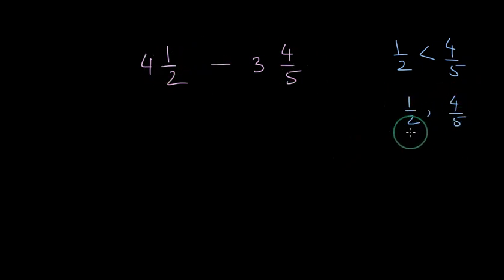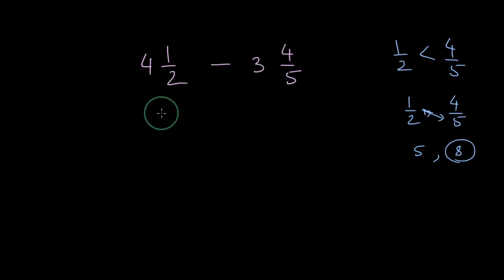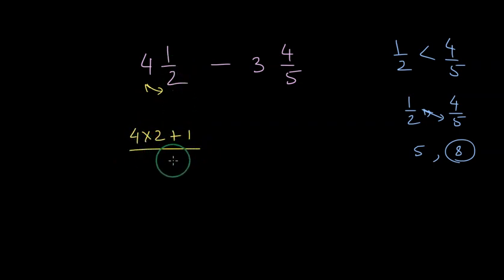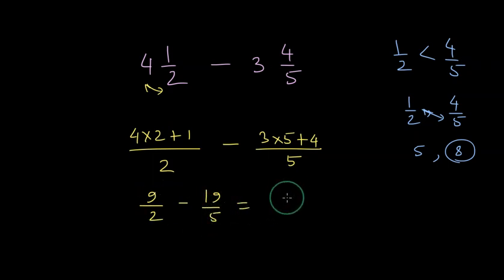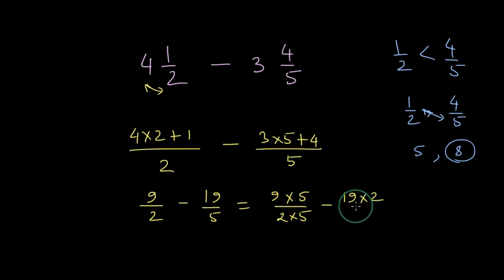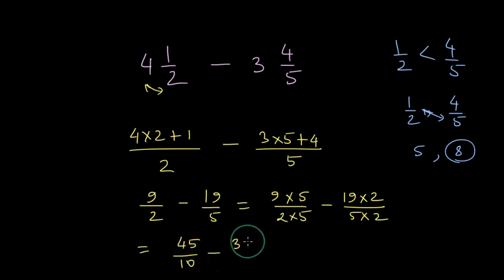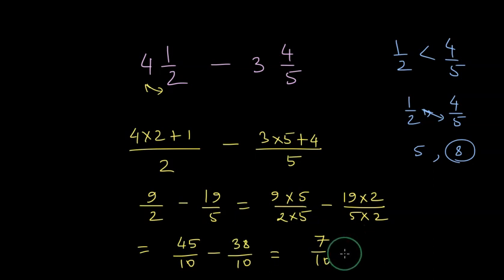The best way is to convert these into improper fractions. Multiplying 4 with 2 and adding 1 in the numerator with denominator 2, minus the same thing for 3 times 5 plus 4 divided by 5 as the denominator, we get 9/2 minus 19/5. We multiply the left-hand side by 5 in the numerator and denominator, and the right-hand side by 2, giving us 45/10 minus 38/10. This gives us 7/10, and there is no whole part. This is how we get our result.